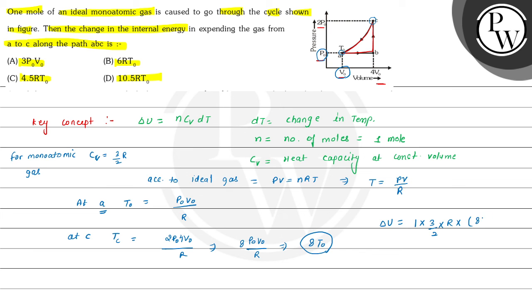And in this ΔT, ΔT is change in temperature that is 8T₀ minus T₀. So this is equals to 7T₀. So del U is equals to 3/2 multiplied by R multiplied by 7T₀. So this del U comes out to be 10.5RT₀.